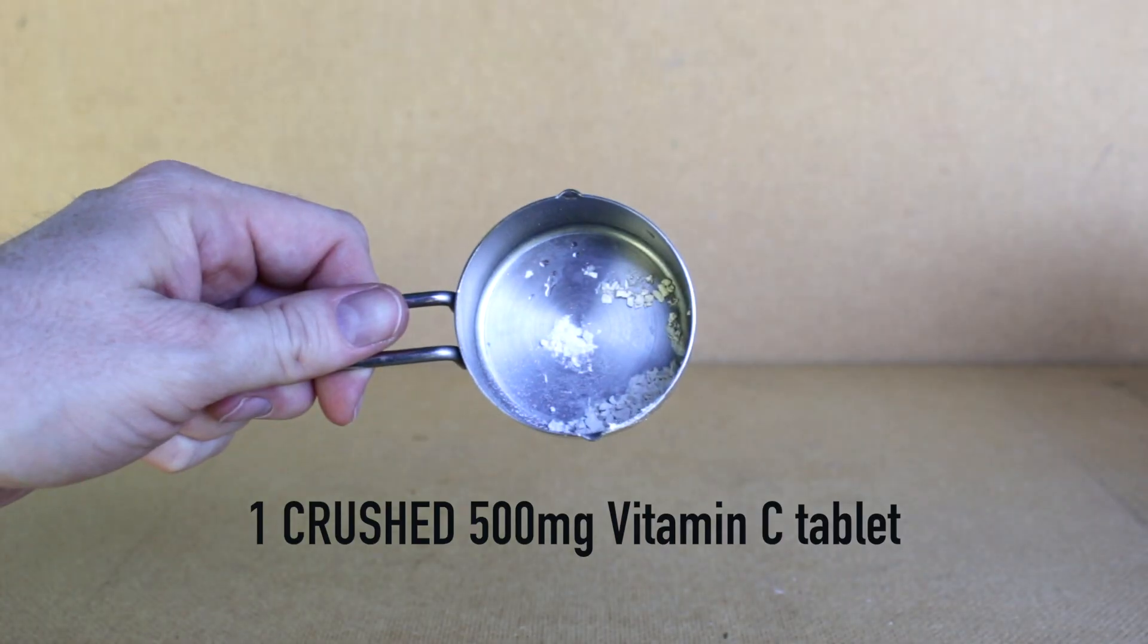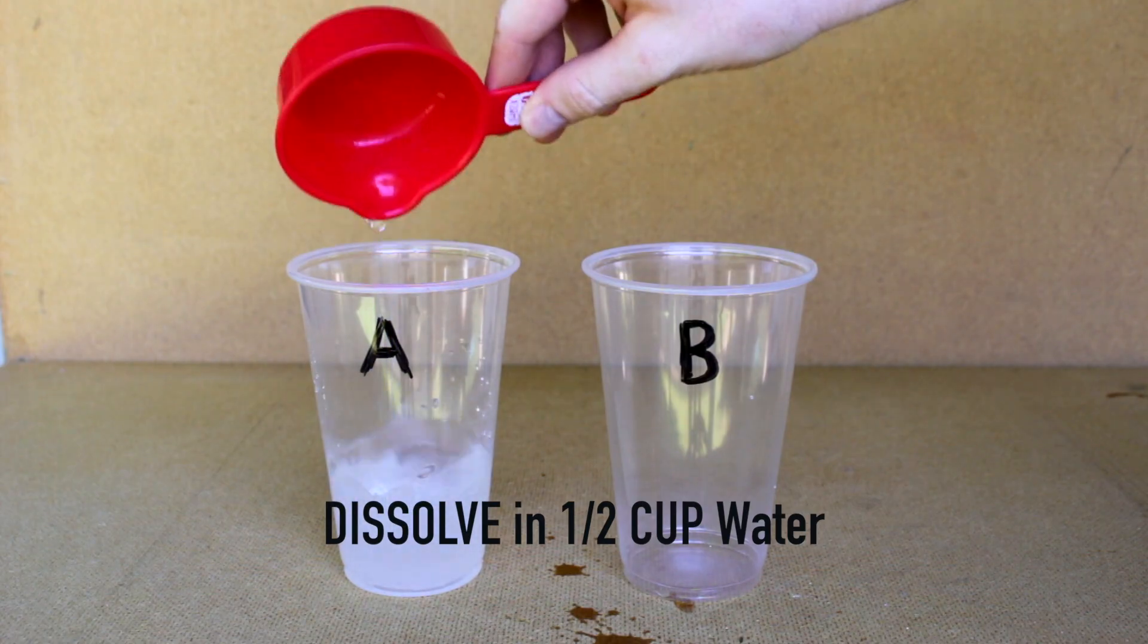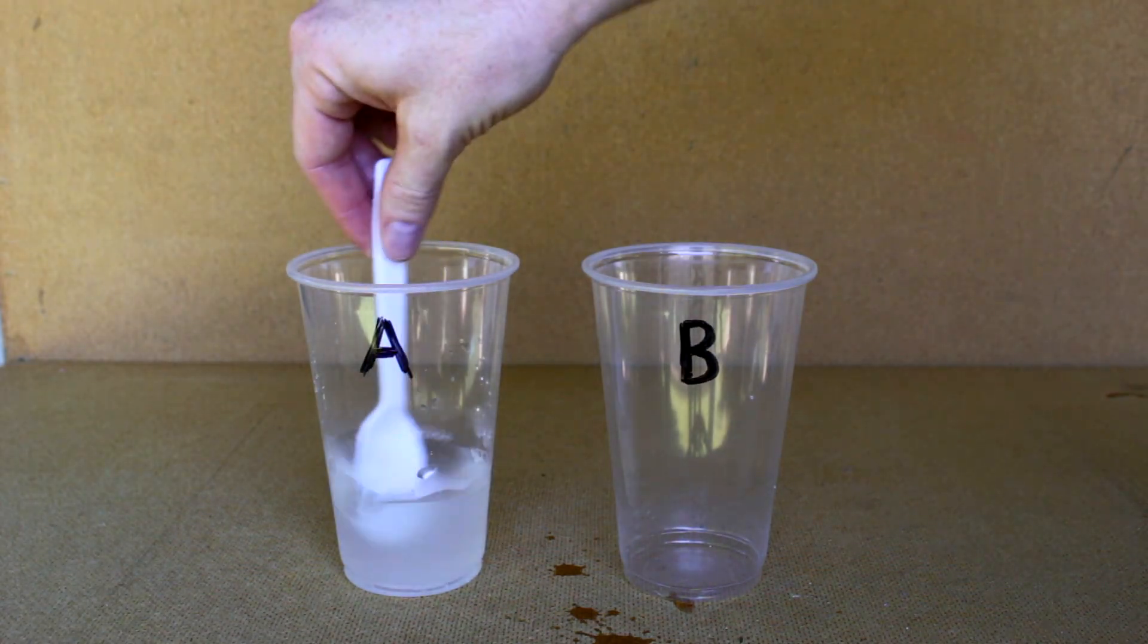Crush up the vitamin C tablet and dissolve that in half a cup of water, this will make your first solution, we'll call it solution A.